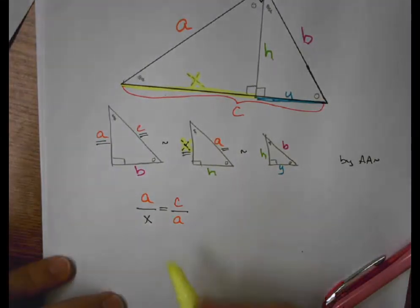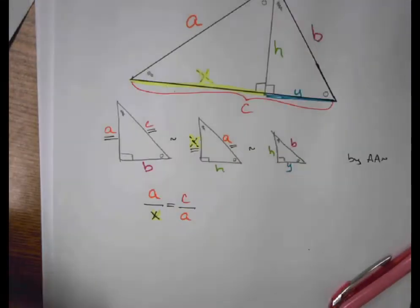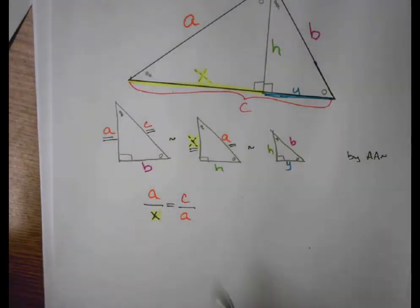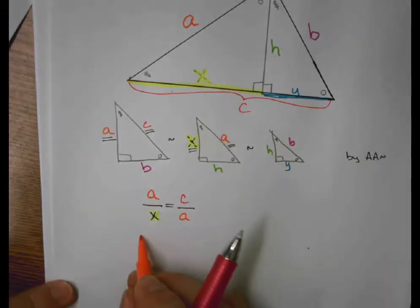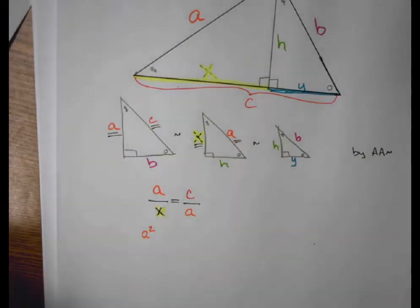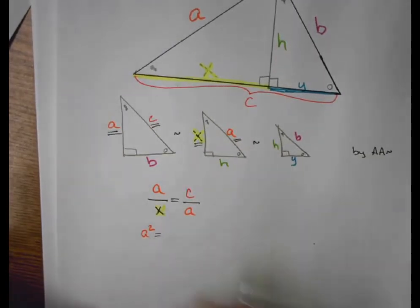Now, why am I doing this? What's the point of all this? Well, what it gives me the ability to do is then use the cross-products, or cross-multiplication, to say that A squared is equal to C times X.